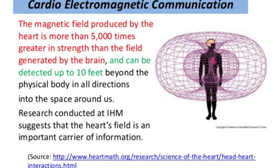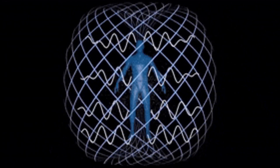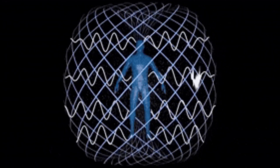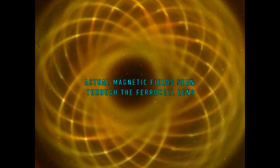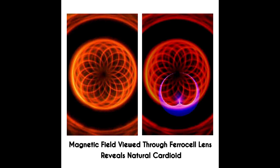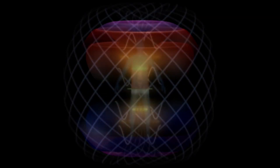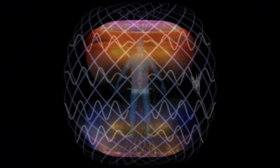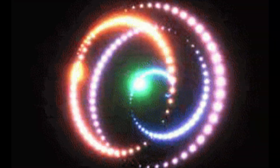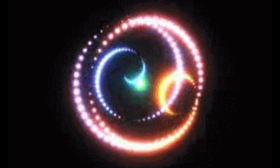First, let's think about the incredible electromagnetic power of the heart, which gives rise to the invisible energy field around the body known as a torus field. When we use a ferro cell lens we can actually make the invisible magnetic field visible, and it's no coincidence that the cardioid overlays right with this sacred spiral pattern. Now let's look at the red and blue magnetic polarities of charge as it pulses throughout the torus field.